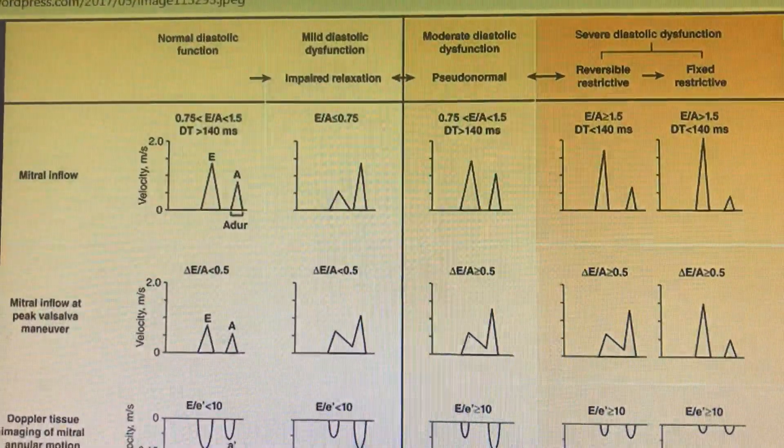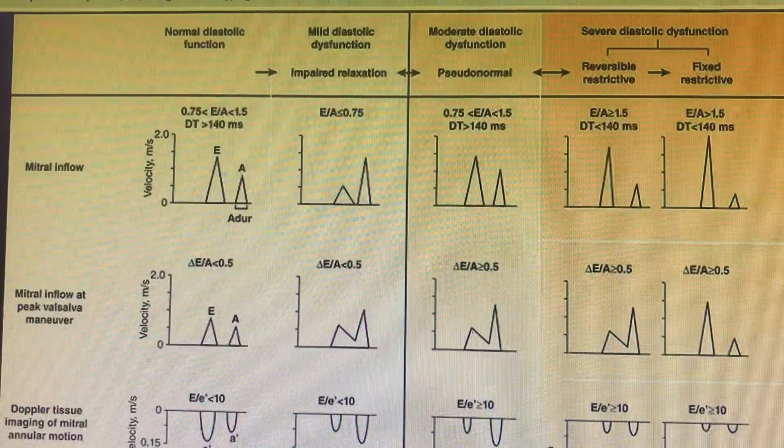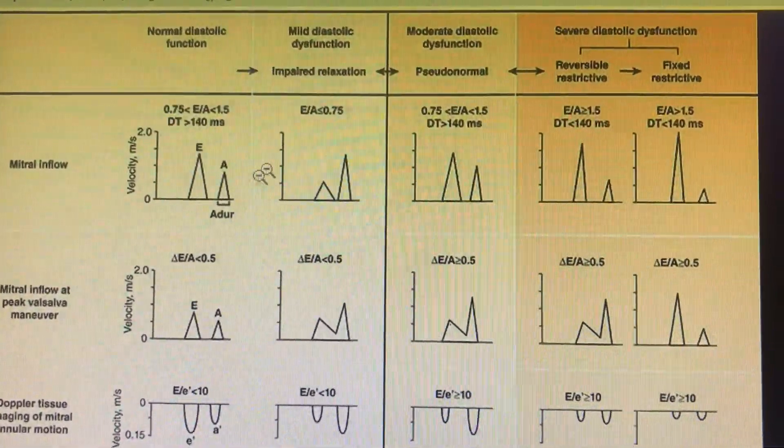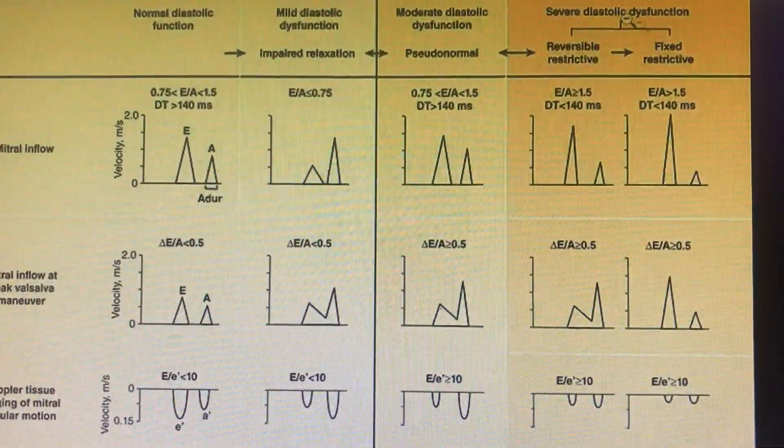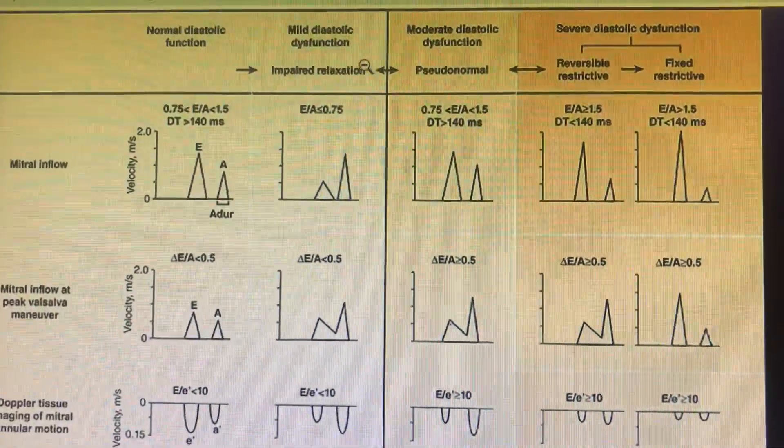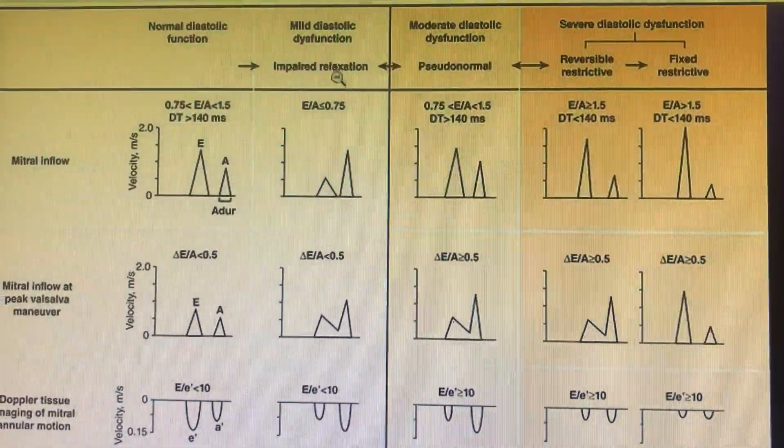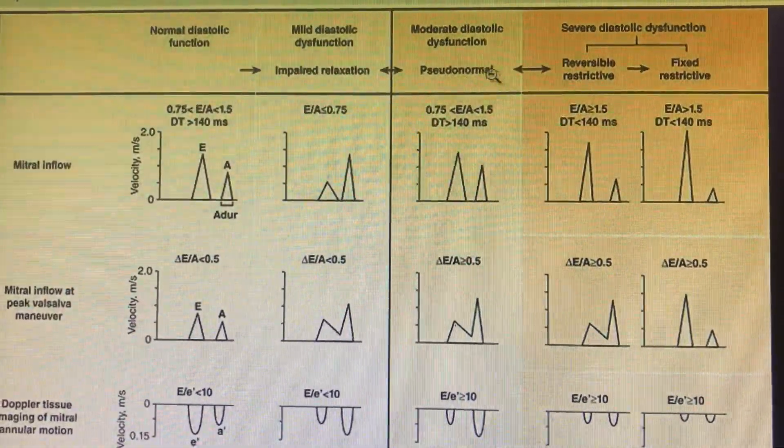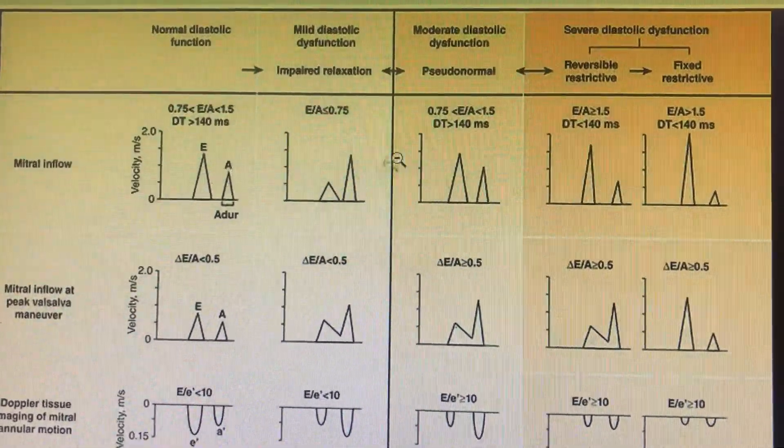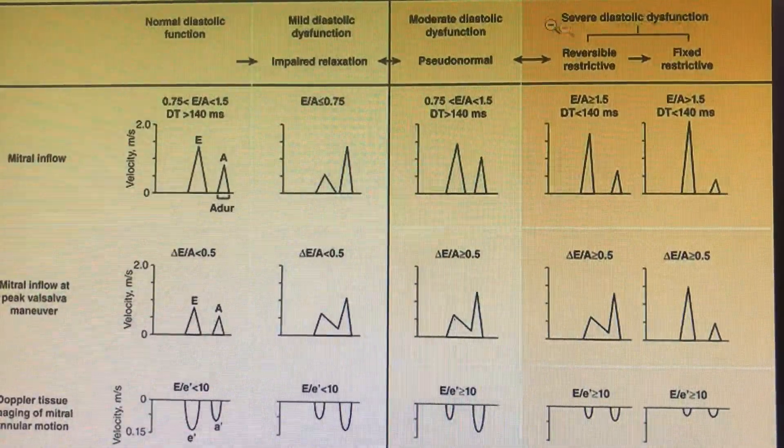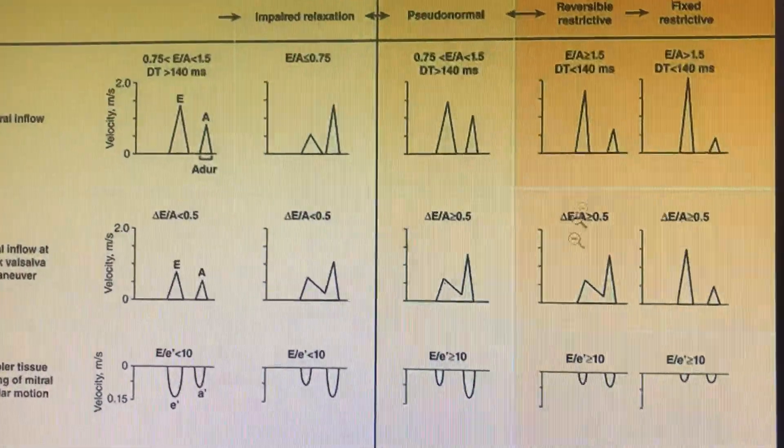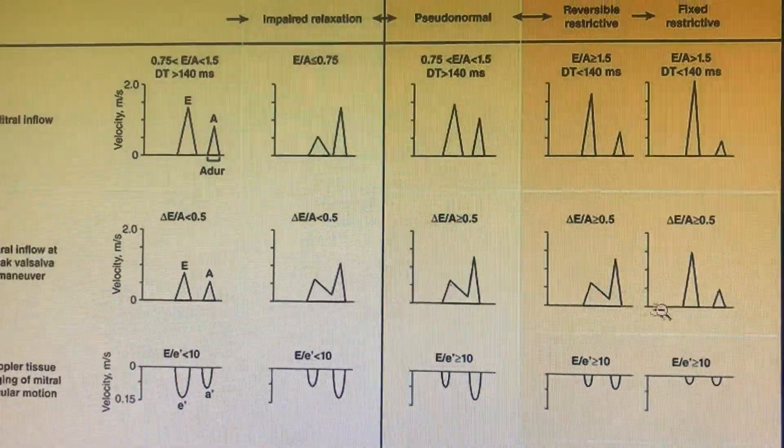Coming to the actual grading of diastolic dysfunction: normal diastolic function, mild diastolic dysfunction, moderate diastolic dysfunction, and severe diastolic dysfunction. Mild diastolic dysfunction is also called impaired relaxation. Moderate diastolic dysfunction is pseudo-normal, where the mitral inflow pattern becomes as good as normal. Severe diastolic dysfunction is further divided into reversible restrictive and fixed restrictive, depending on the changes of the mitral inflow pattern to the Valsalva maneuver.